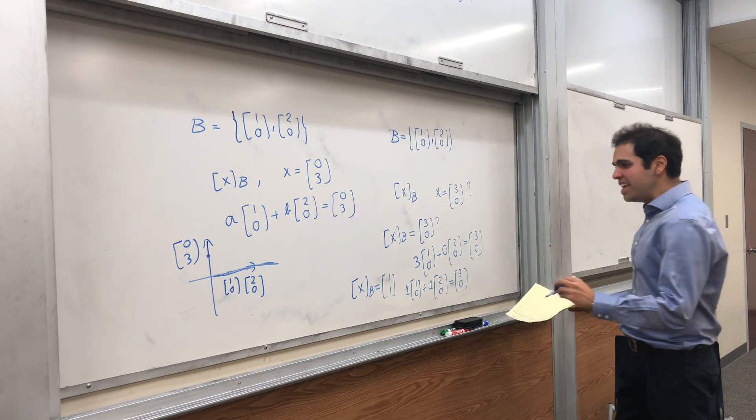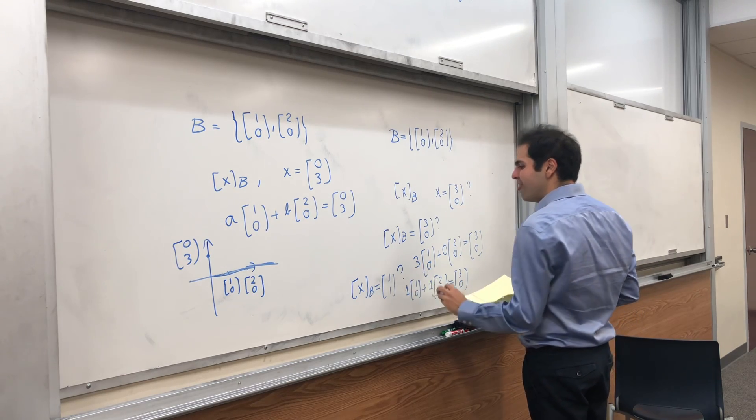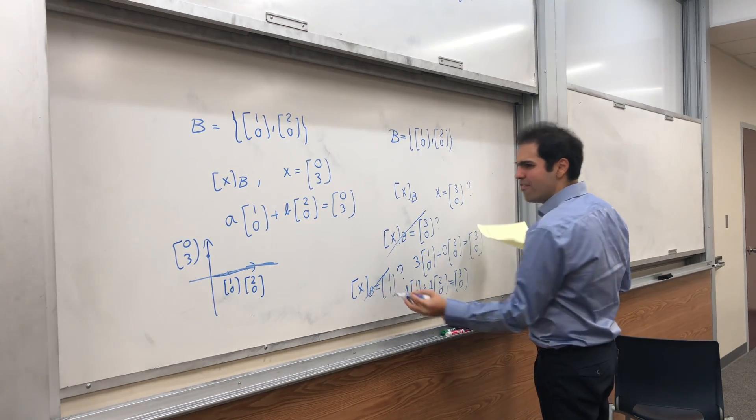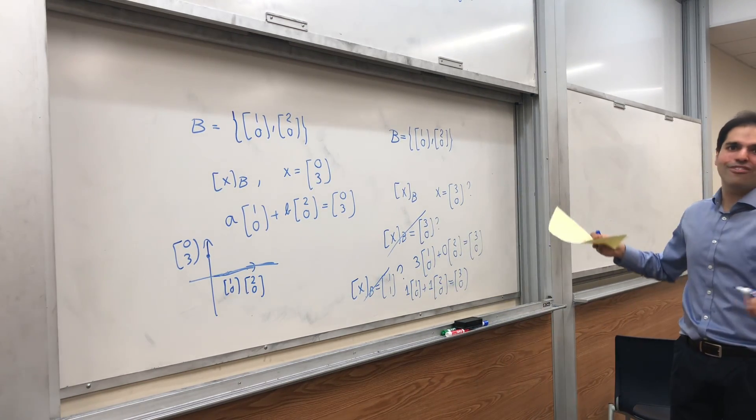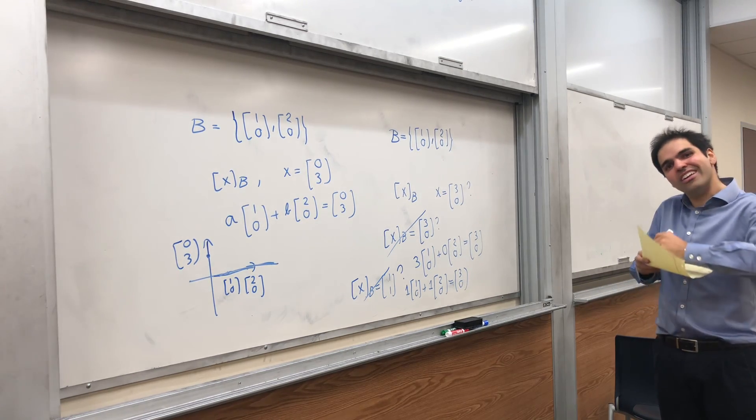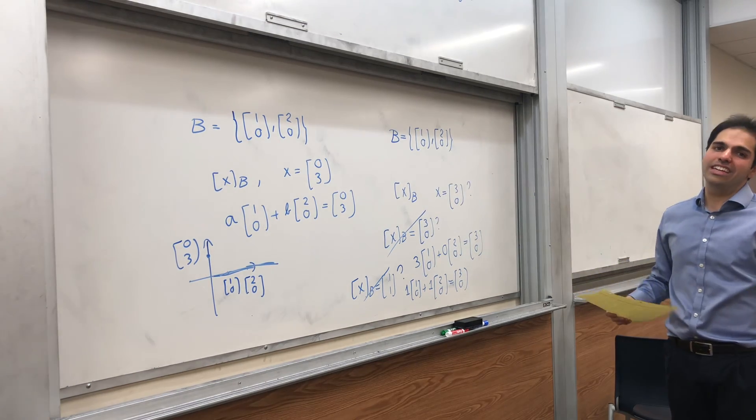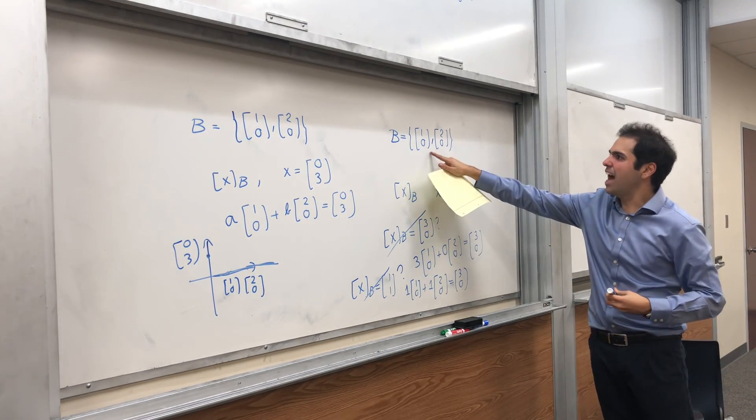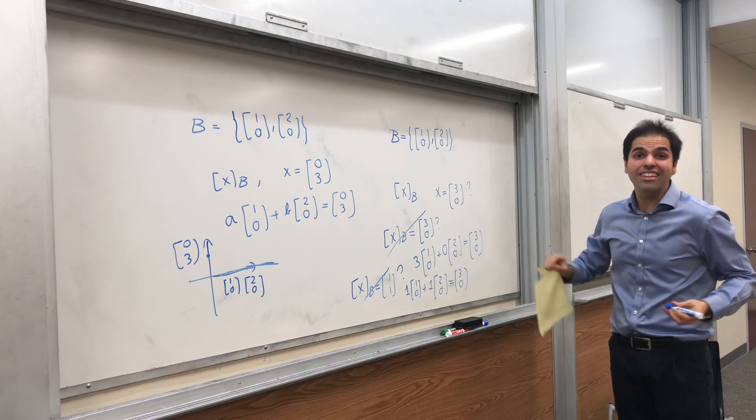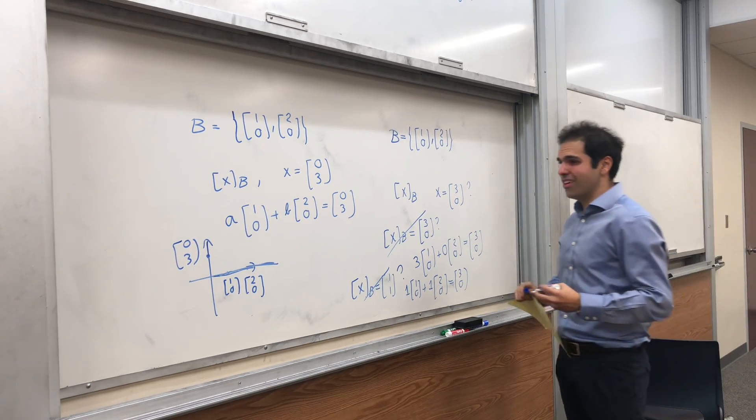So in other words, here, interestingly, our vector x, the same vector, has two different barcodes. And since you want a unique barcode, ideally, we need to have our set to be linearly independent. So what happened here was this set was linearly dependent, so stuff went wrong.